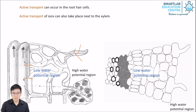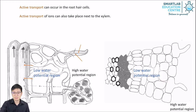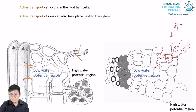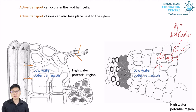Let's be more detailed about this. Active transport can occur in the root hair cells. But once that has happened, the ions move further in by diffusion — diffusion occurs from cell to cell. Active transport will typically take place only in the root hair cells. Diffusion can also occur there, but if the concentration of ions is already higher inside the cell, active transport takes place.